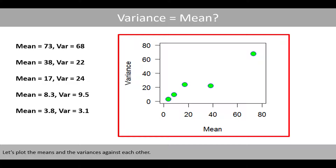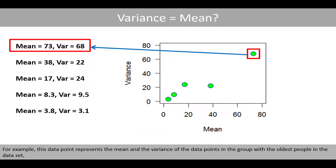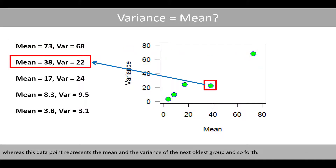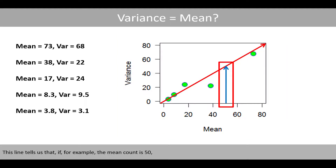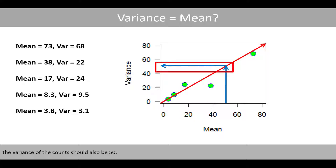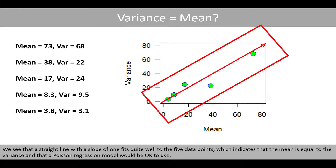Let's plot the means and the variances against each other. For example, this data point represents the mean and the variance of the data points in the group with the oldest people in the data set, whereas this data point represents the mean and the variance of the next oldest group, and so forth. If the Poisson regression model should fulfill the assumption that the mean is equal to the variance, these data points should scatter around a straight line with an intercept of 0 and a slope of 1. This line tells us that if the mean count is 50, the variance of the count should also be 50. We see that the straight line with slope 1 fits quite well to the five data points, which indicates that the mean is equal to the variance and that the Poisson regression model would be appropriate to use.